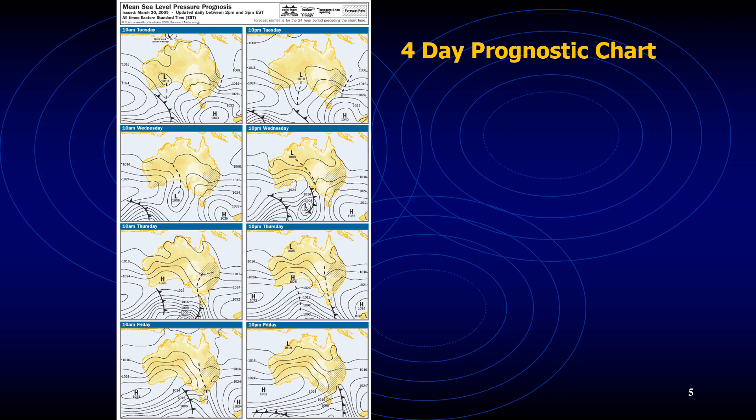Some prognosis charts are issued as four-day prognostic charts. So not only 24 and 48 hours, sometimes they provide a four-day prognosis chart as well. These are very useful, especially if there are any tropical revolving storms, depressions, frontal depressions, or storms nearby, giving an indicator of what the weather will be.